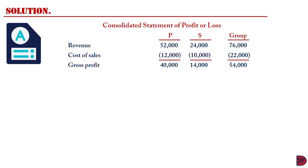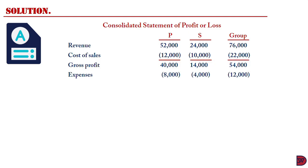When we subtract cost of sales from revenue we get a gross profit of $40,000 for P, $14,000 for S, and $54,000 for the group. You can subtract vertically or add gross profits horizontally — it gives the same answer. Expenses are $8,000 for P, $4,000 for S, $12,000 for the group. Profit before taxation is $32,000 for P, $10,000 for S, and $42,000 for the group.